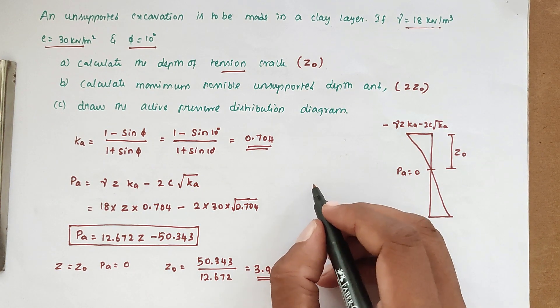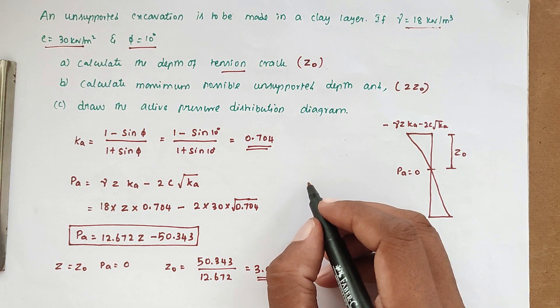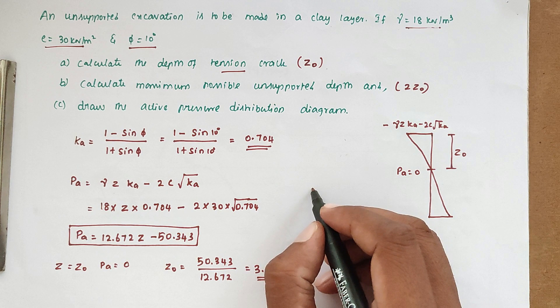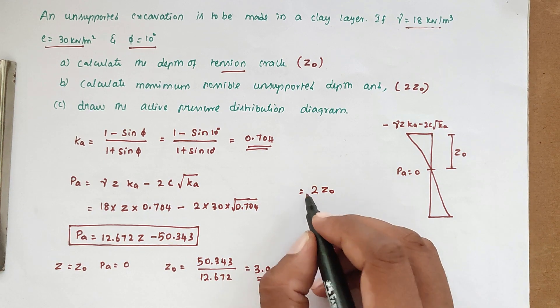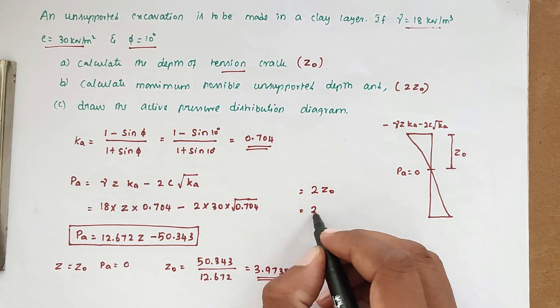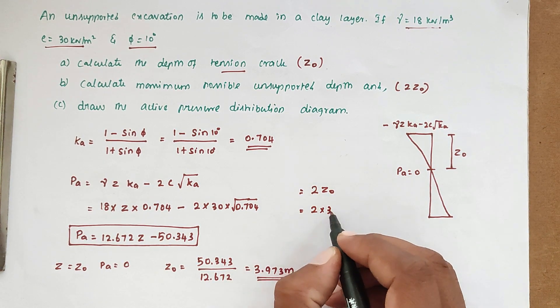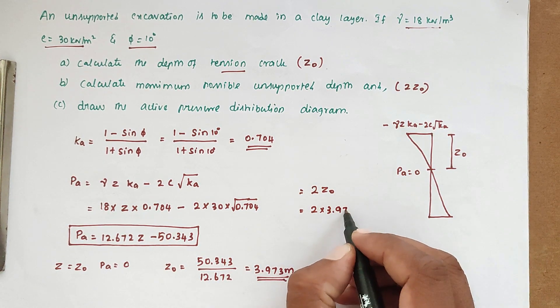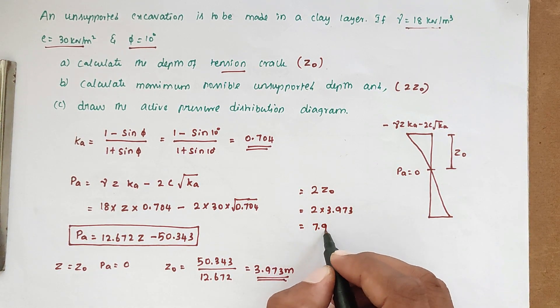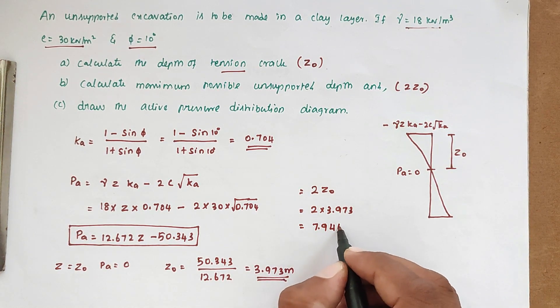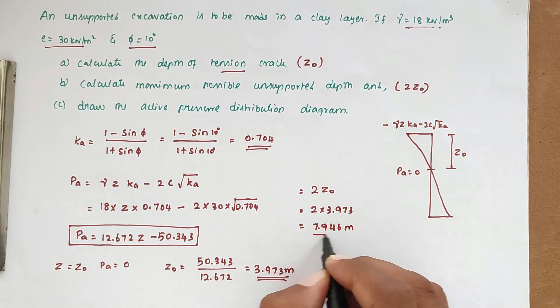Now we find the maximum possible unsupported depth, which is 2 times z-naught. So 2 × 3.973 = 7.946 meters.